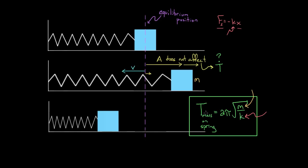This is what the period of a mass on a spring depends on. Note that it does not depend on amplitude — there's no amplitude in the formula. Change the amplitude and it doesn't matter; those effects offset. The period only depends on the mass and the spring constant.